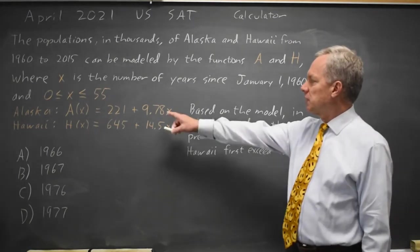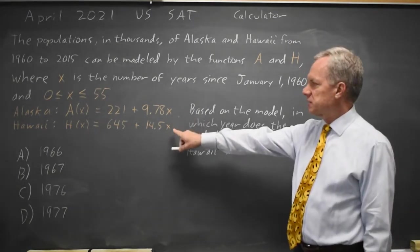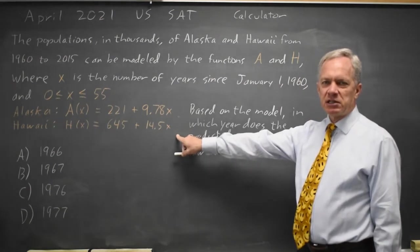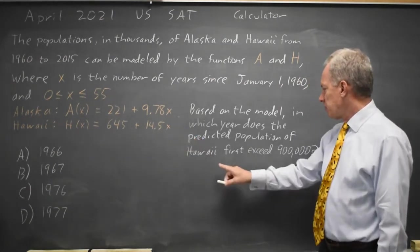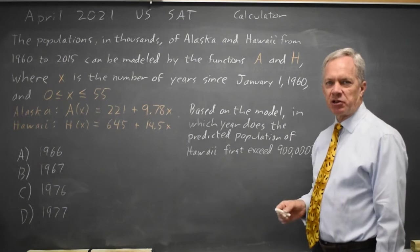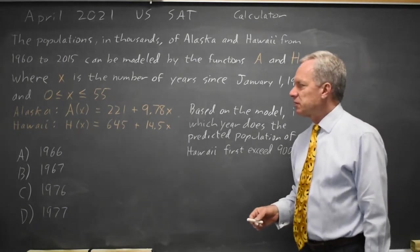The College Board gives us a pair of linear equations for the populations of Alaska and Hawaii and based on these they ask for the year in which the population of Hawaii first exceeds 900,000 where these numbers are in thousands.